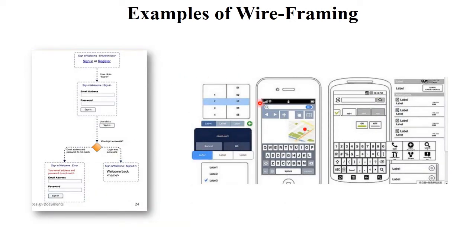Here is another example of the wireframing technique — it is just a kind of flowchart. Suppose there is an email address, password, and sign-up page. Initially there is a sign-in or register option. If you click on sign-in, it goes to the next page. After entering the email address and password and clicking sign-in again, it goes to the next page. This is the wireframing technique — the design is generated before the design phase to show what the system will look like in the future, including mobile screen layouts.